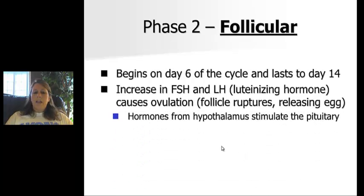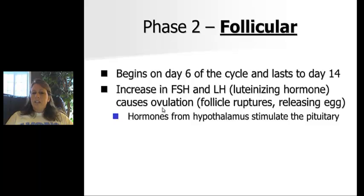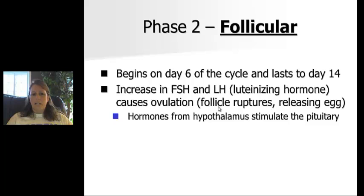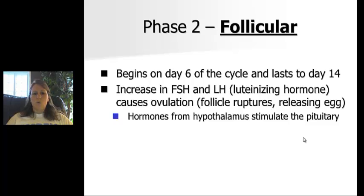The second phase is the follicular phase, which begins on day six and goes to day 14. During this phase we have FSH again, plus a new hormone: LH, luteinizing hormone. As these two hormones increase, they cause ovulation. Ovulation is when the follicle surrounding the maturing egg ruptures and releases the egg. The hypothalamus stimulates the pituitary gland for the release of these two hormones.